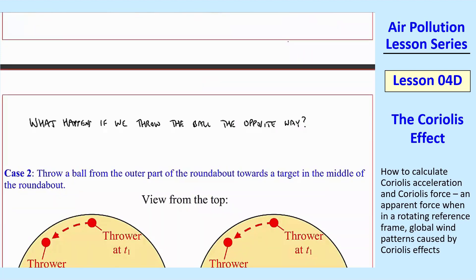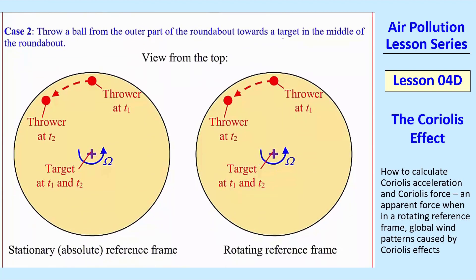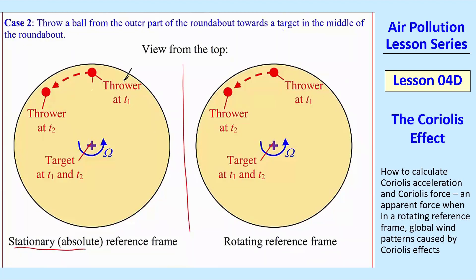so let's look at what happens if we throw the ball the opposite way. So now let's look again from the top, and now the thrower is on the outside, and the receiver, the target, is in the middle. So what happens here? Well, again, from the stationary absolute reference frame on the left, the thrower throws it, and he seems to be throwing it at the target. But actually, since he's moving,